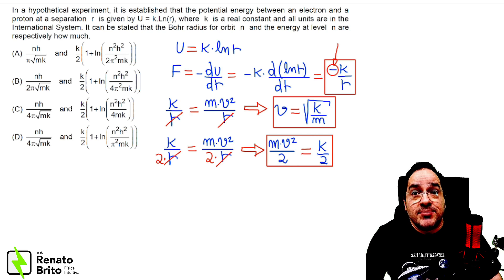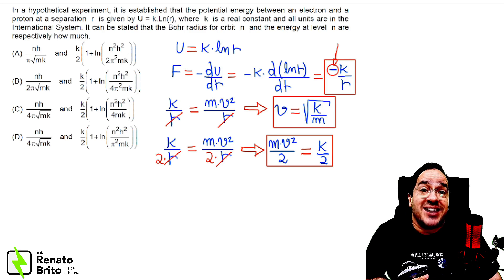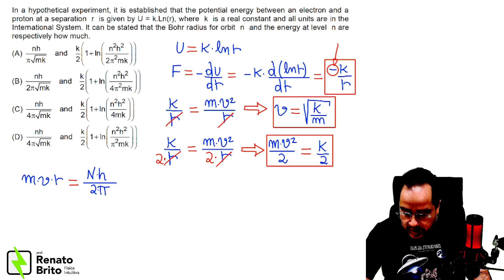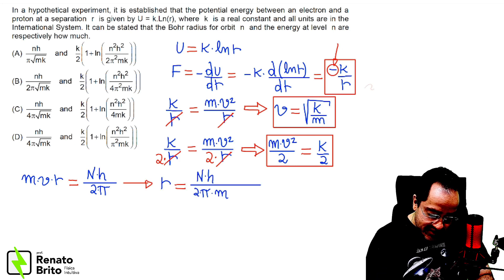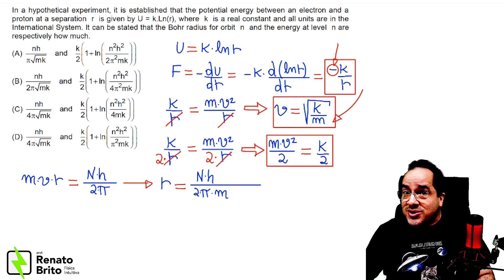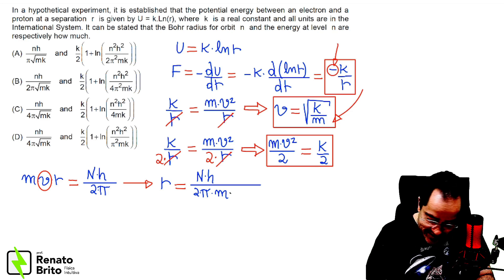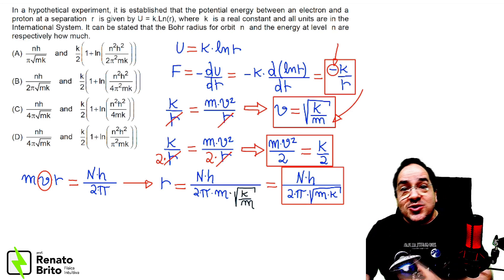As we are considering Bohr's model, we have to take into account the quantization of the angular momentum of this electron: mvr equals nh over 2π. At this point, we can find Bohr's radius. We have already found the expression of the orbital velocity of this electron, so we must replace that expression here. And here is the expression of Bohr's radius.